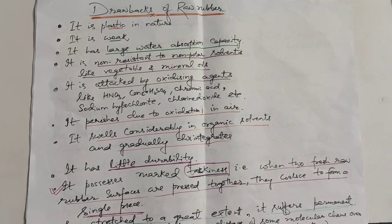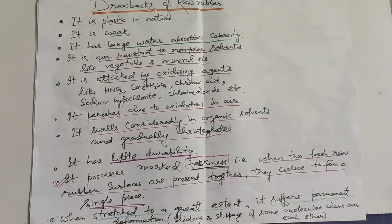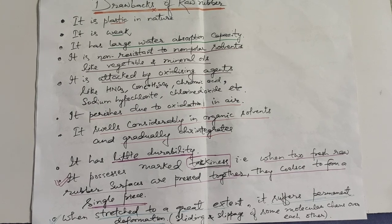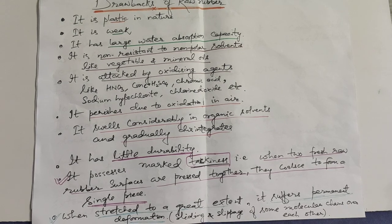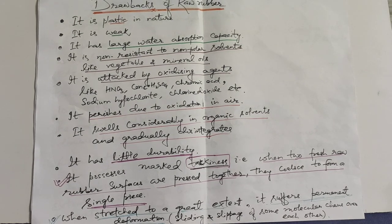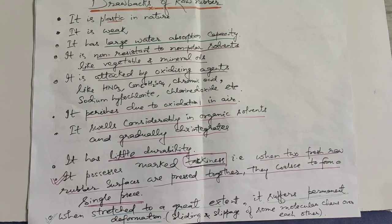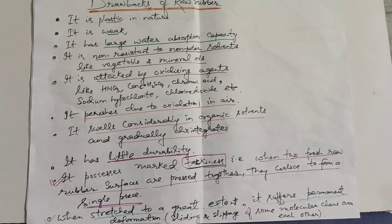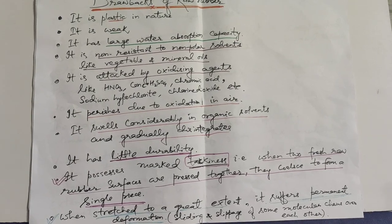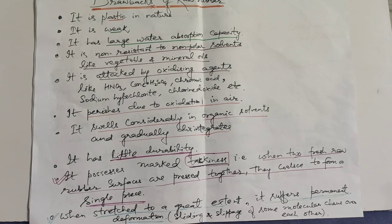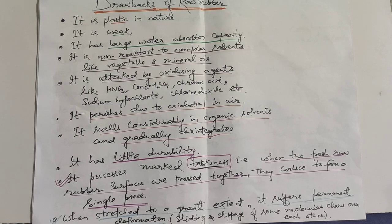Raw rubber has little durability and possesses marked tackiness — when two fresh raw rubber surfaces are pressed together, they coalesce to form a single piece. When stressed to a great extent, it suffers permanent deformation through sliding and slippage of some molecular chains over each other, and this deformation cannot be regained.